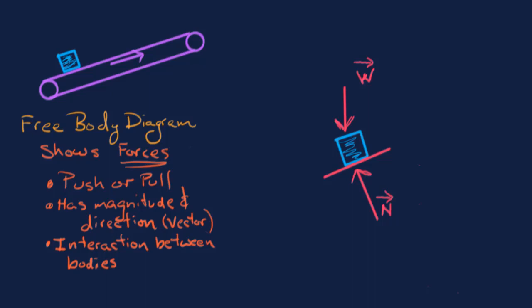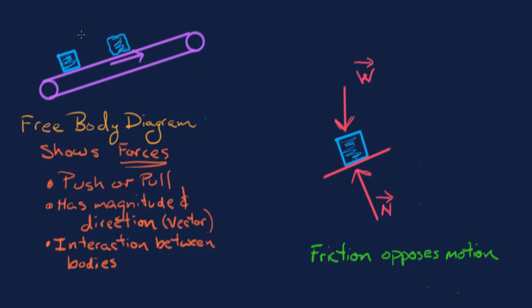One argument says friction opposes motion. Looking at the motion of the ice block — at one moment it's down on the left, and a short while later it has moved up the belt — the motion is upward and to the right. Therefore, the friction force opposing that motion would be downward and to the left. But let's think about this more deeply.